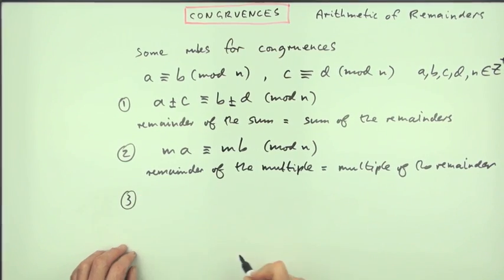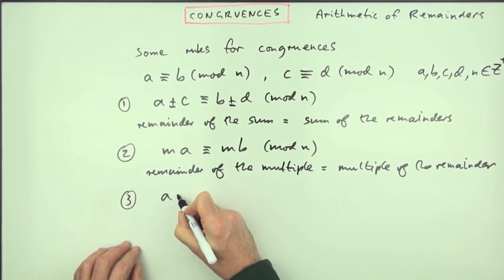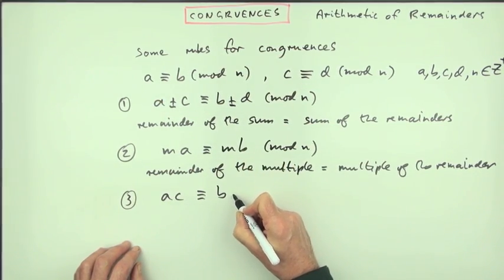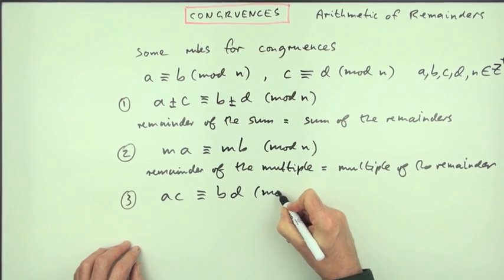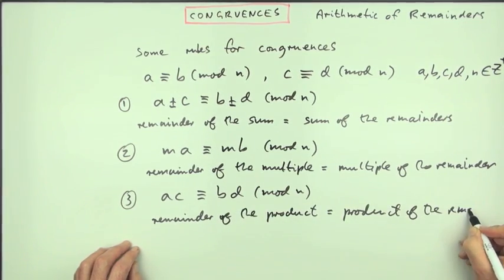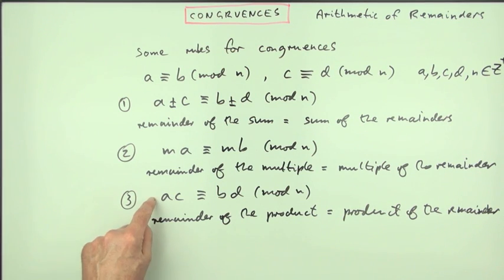And the third one, the multiplication: A times C will be congruent to B times D mod N. The remainder of the product equals the product of the remainder. That's a very useful one because it can lead to powers of numbers, the remainder after division into a power of a number.